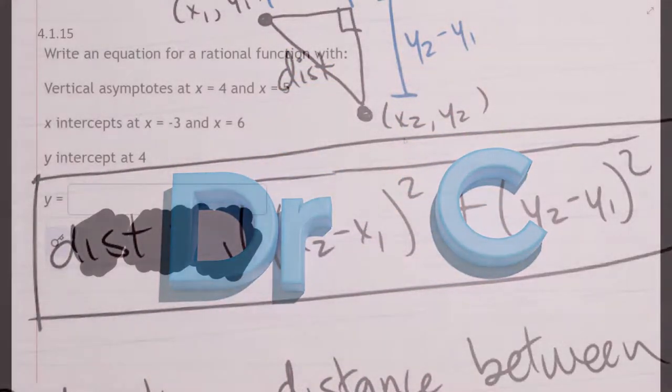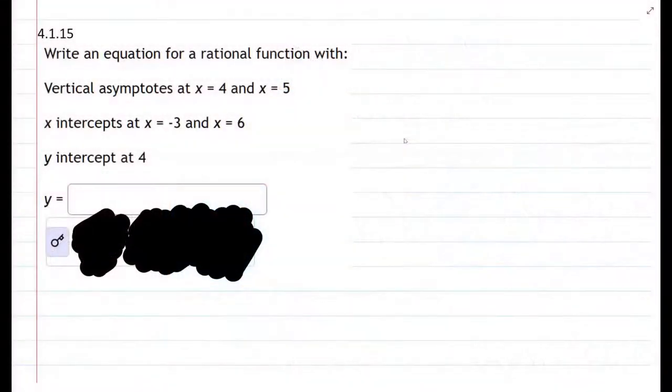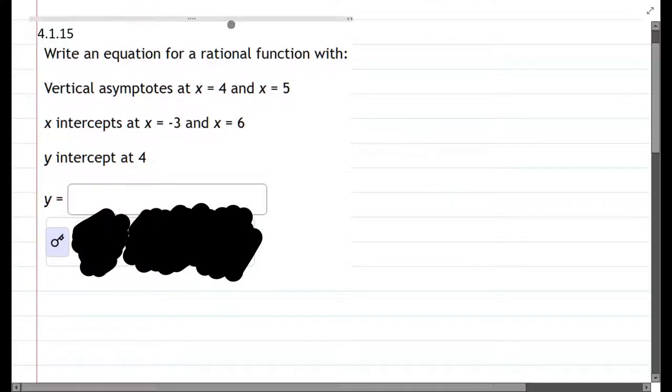We're going to write an equation for a rational function, and one of the most important things to remember about rational functions is that you have x-intercepts in the numerator.